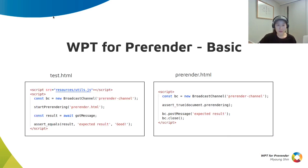It's quite simple to write WPT tests for pre-rendering. We create a broadcast channel to communicate with the pre-rendering page, open the pre-rendering page, and wait until getting a message from it. At the pre-rendering page, we connect the channel and check if this document is pre-rendering. Then we send the result to the main test page and check the result.